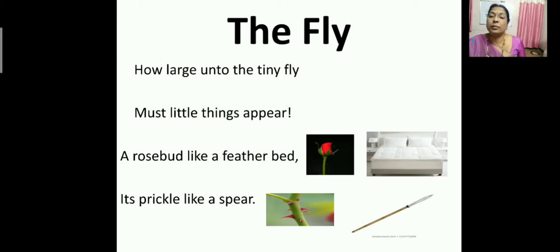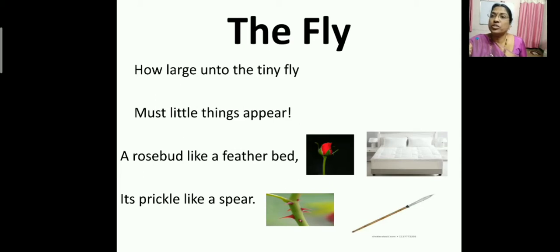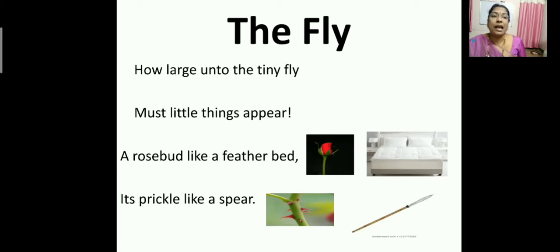A rose bud is compared to a feather bed — so the rose bud appears to the fly like a feather bed. Its prickle — prickle refers to the thorns or sharp objects which grow on the rose plant — it appears to this fly like a spear. A spear, as you can see in the picture, is used to kill animals by hunters.